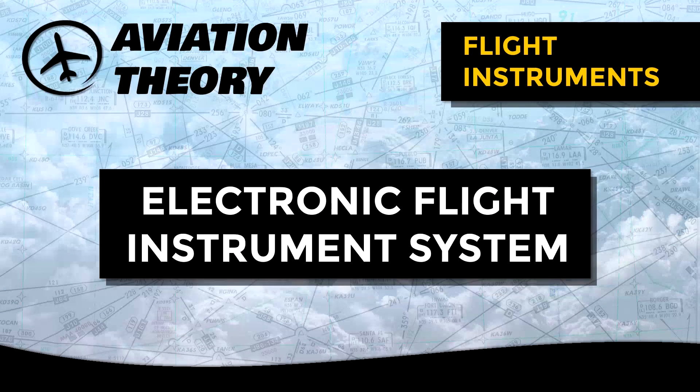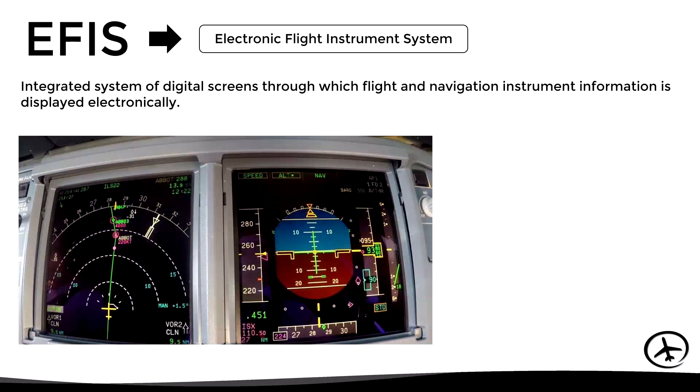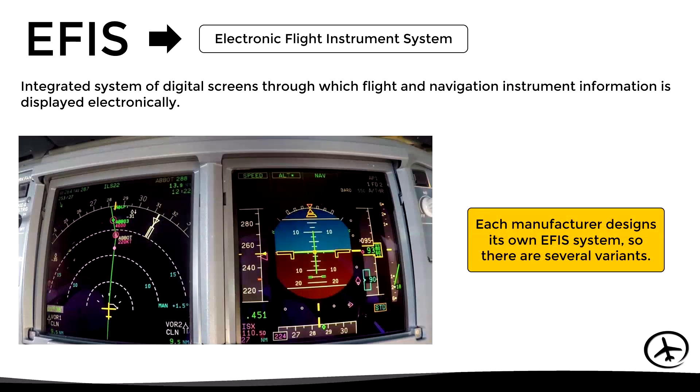Today, we will talk about the Electronic Flight Instrument System, which is usually abbreviated as EFIS. The EFIS is an integrated system of digital screens through which flight and navigation instrument information is displayed electronically. Since each manufacturer designs its own EFIS system, there are several variants among the different models, so it is important to be familiar with the particular model to be operated.